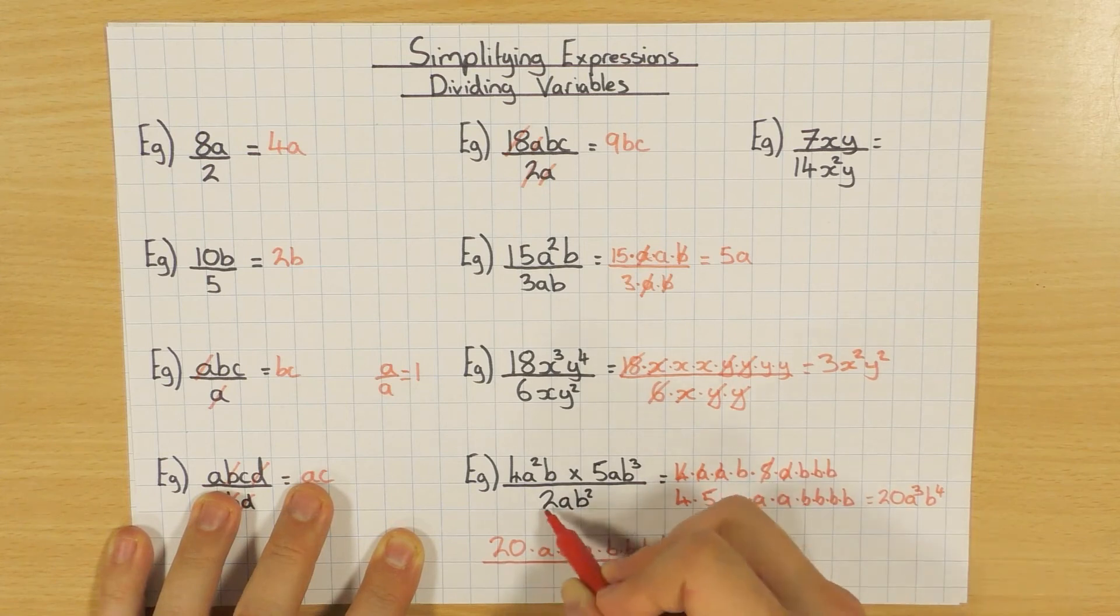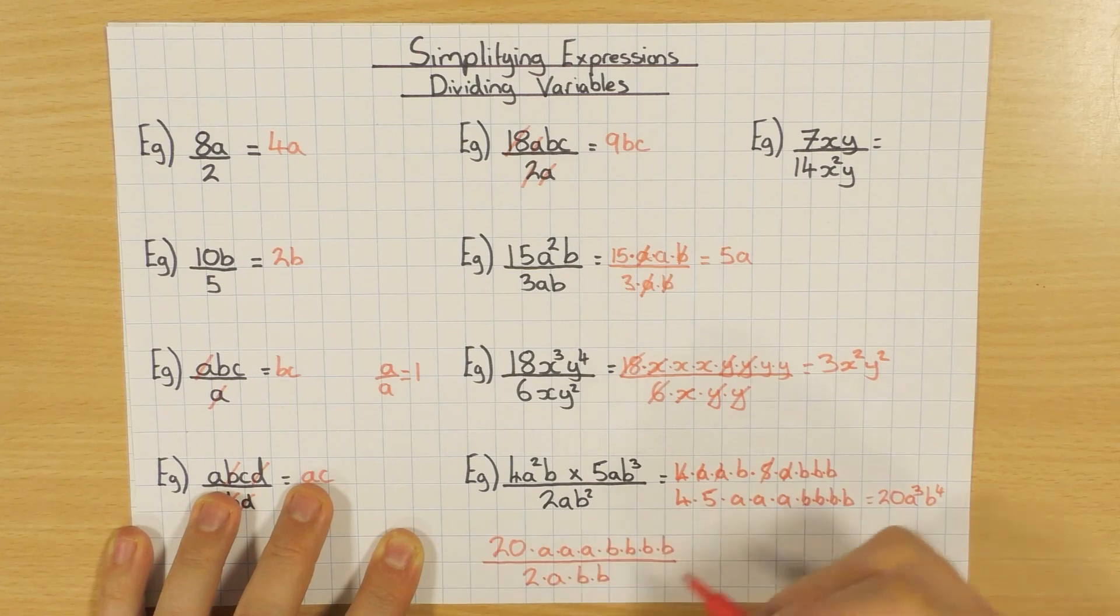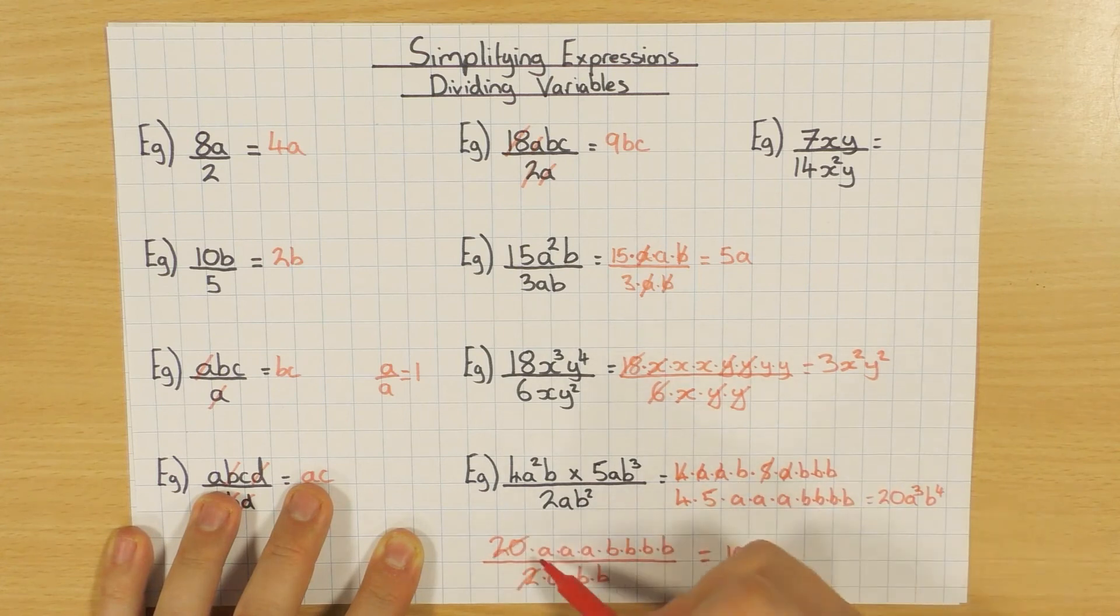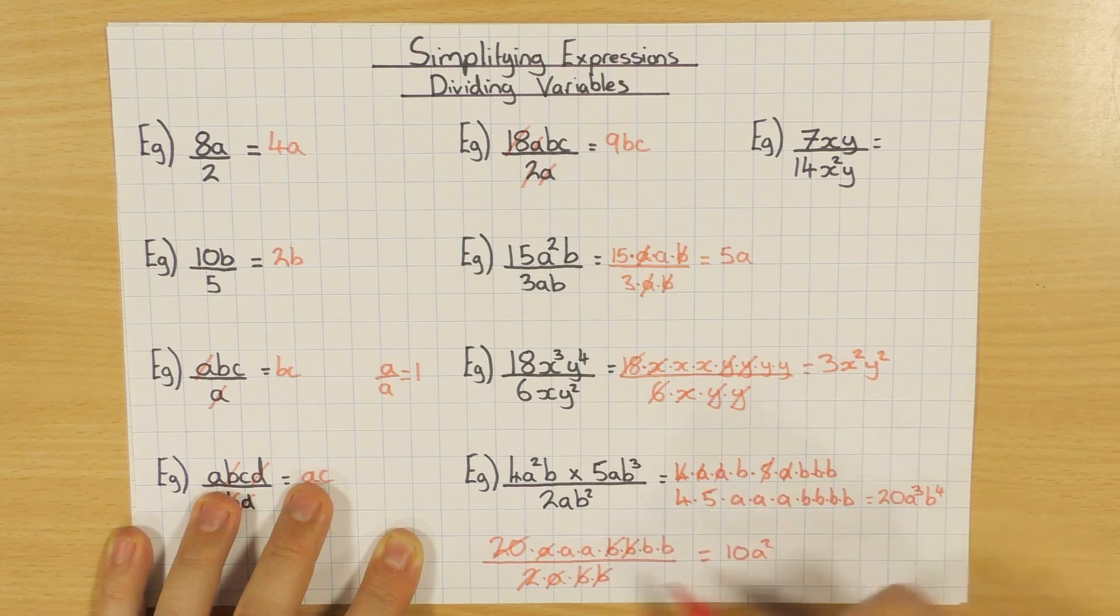Now I can expand the bottom bit here, 2 times a, and then b squared, which is b times b. And now I can do my division. 20 divided by 2 is 10. Dealt with that. I've got 1a on top, 1a on bottom, so they cancel. I've got 1b on top, 1b on the bottom, another b on top, another b on the bottom. And therefore I'm left with a squared, these two here, and b times b, which is b squared. Okay?